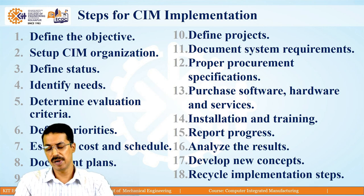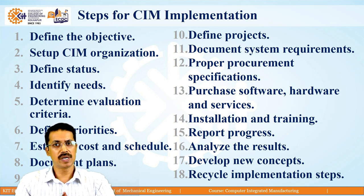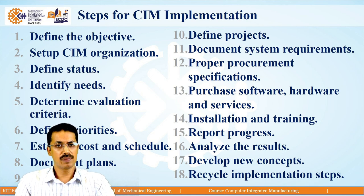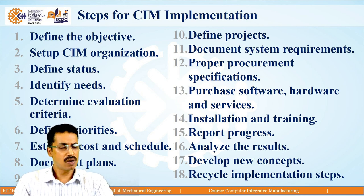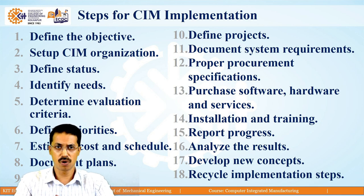Now we will discuss the steps in CIM implementation — the different steps we have to follow while implementing a CIM system. The first step is to define the objective: why we are going for CIM implementation and what will be the outcome. Then set up the CIM organization, define status, and identify needs. Next is to determine evaluation criteria — whenever you are implementing a CIM system at the micro level, you have to evaluate its performance according to pre-set criteria. This determination of evaluation criteria is a very important step before implementation.